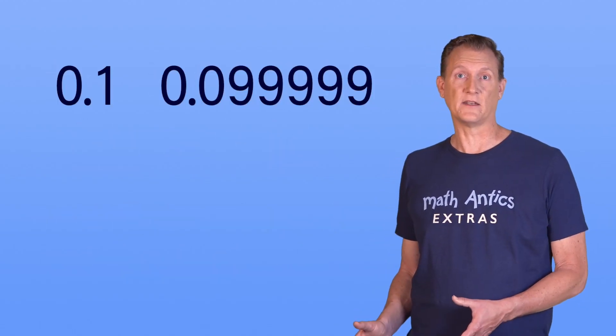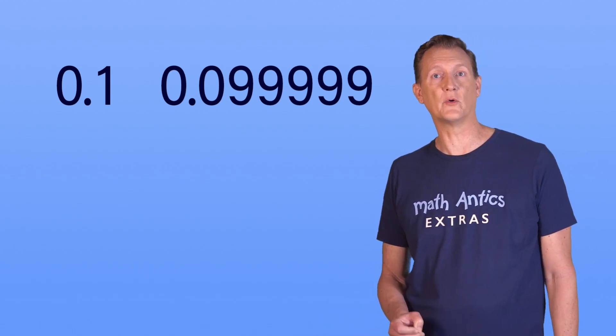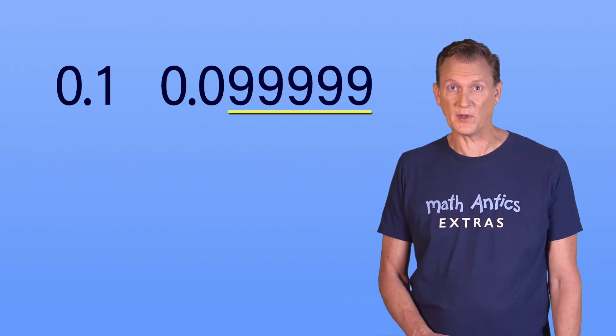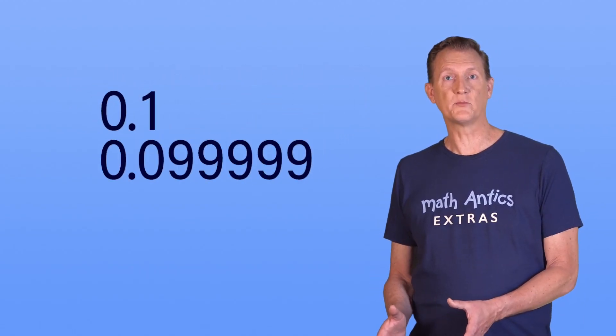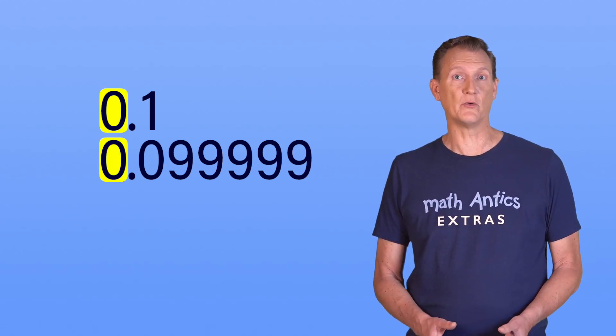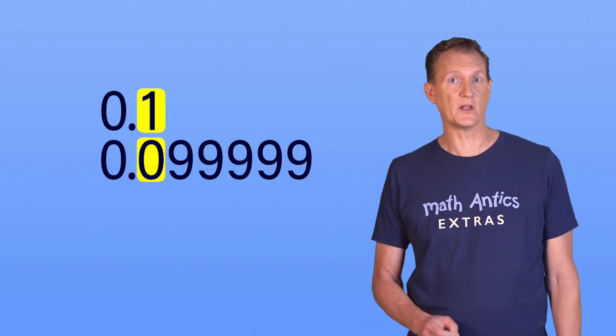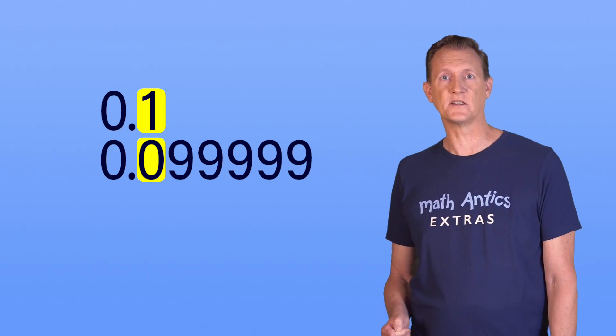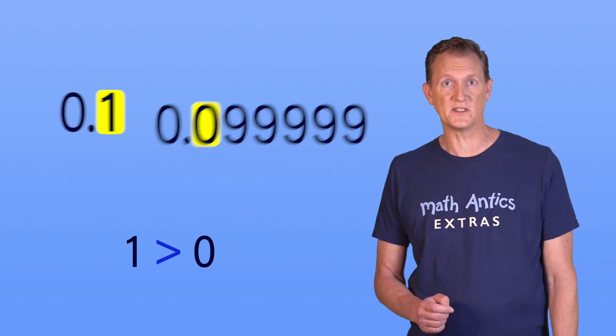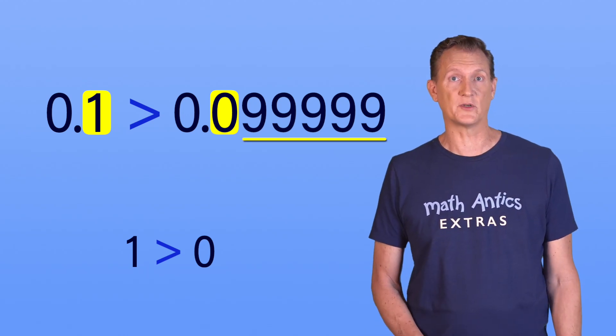Here's an extreme example of that. Which of these decimals has the largest value? 0.1 or 0.099999? Well, all of those 9s sure make the second number seem big, but looks can be deceiving. Let's line up the decimal points to see what's really going on here. Starting with the biggest number place, both have a 0 there, so we can't tell from those digits. Moving to the tenths place, the first number has a 1, representing 1 tenth, while the second number has a 0, representing 0 tenths. 1 is definitely greater than 0, which means that 0.1 must be greater than 0.099999, even with all those extra digits.